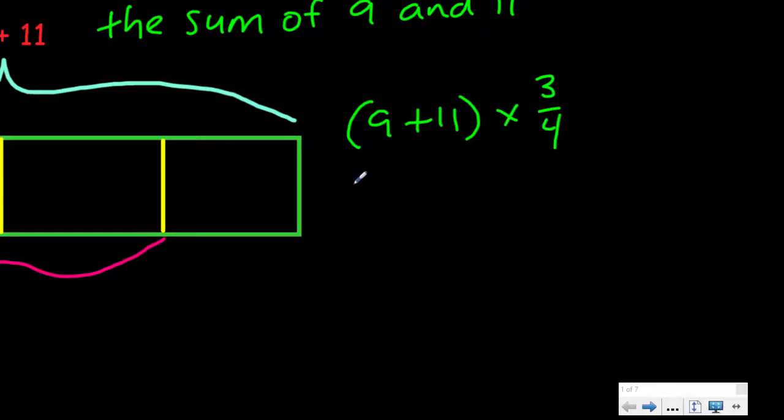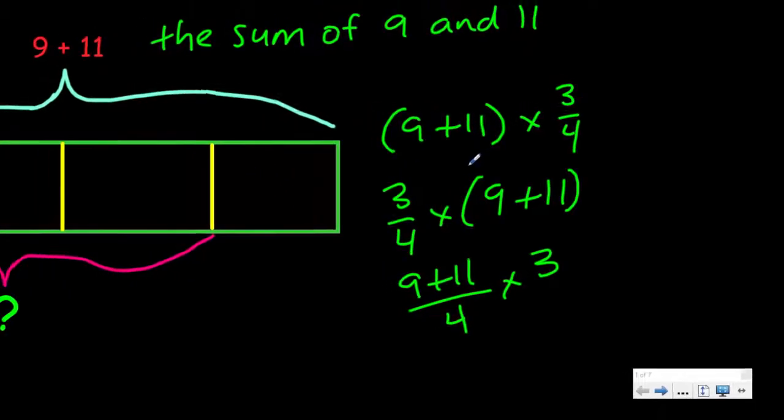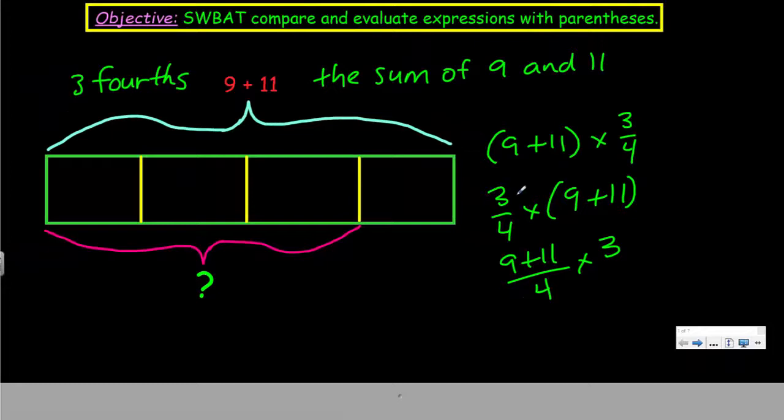So this tape diagram is showing three-fourths of the sum of 9 and 11. Now I understand that. Maybe we should write that down. Three-fourths, and then the sum of 9 and 11. The parentheses tell us that we're going to be adding the 9 and 11 first, and then we're going to multiply.